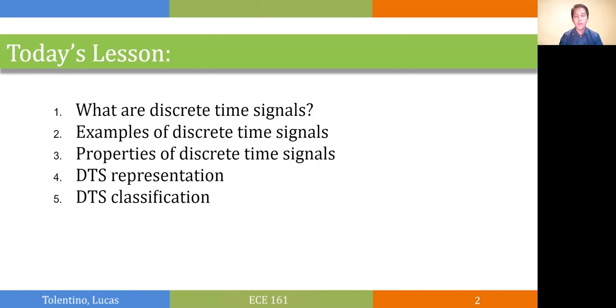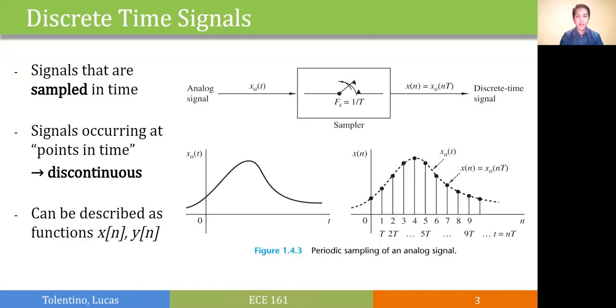Discrete time signals are signals that are sampled in time. Comparing it to analog signals, these signals occur at points in time, meaning they are discontinuous. So these are represented by functions of n such as x of n or y of n.